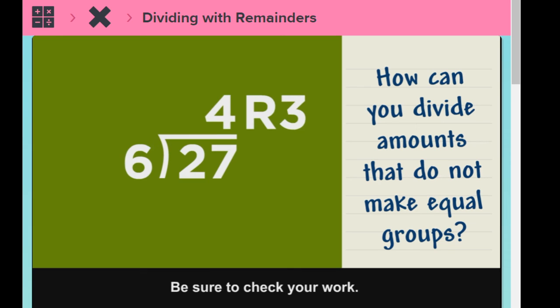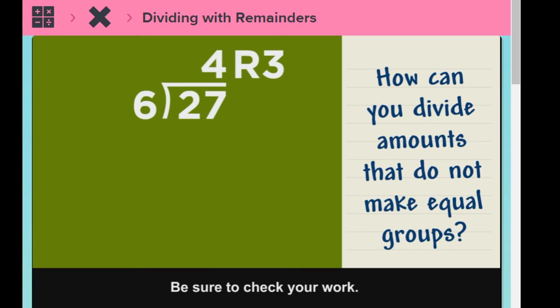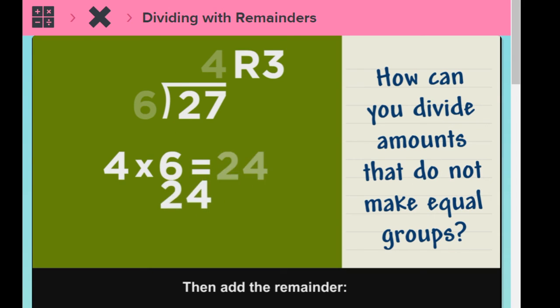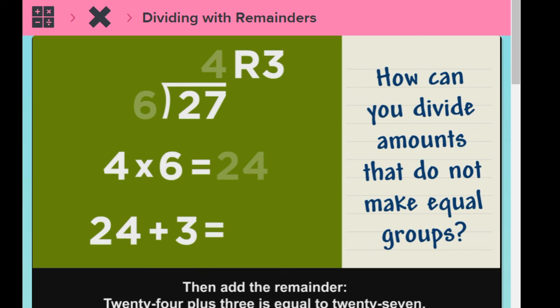Be sure to check your work. Multiply four times six, which is equal to 24. Then add the remainder. 24 plus three is equal to 27.